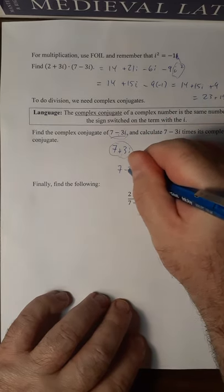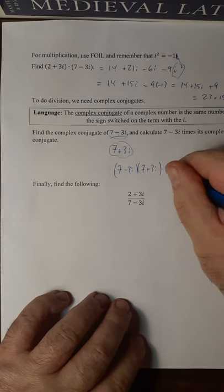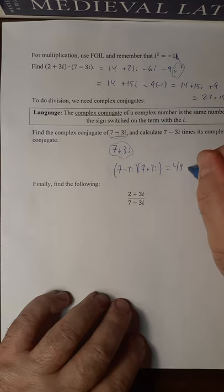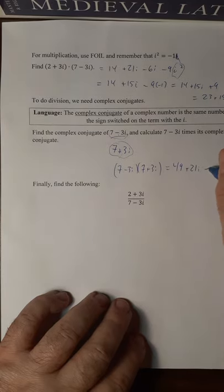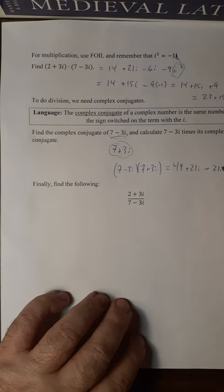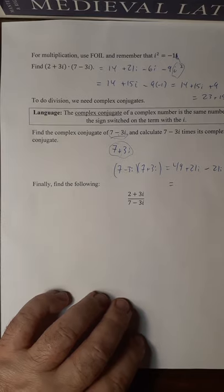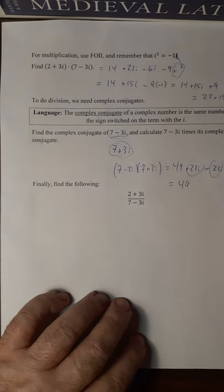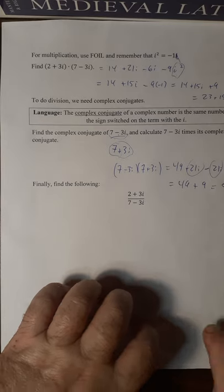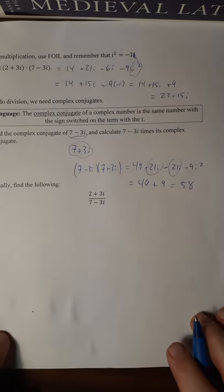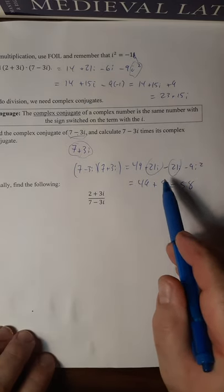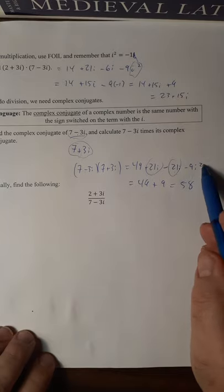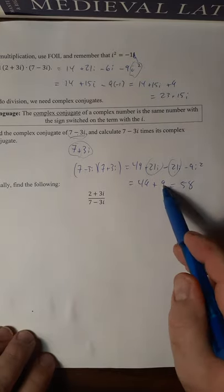Now the nice thing about these, and about any conjugates, is that when you FOIL them out, the outer and inner terms disappear. So first is 7 times 7 is 49. Outer is 7 times 3i, which is plus 21i. Inner is minus 3i times 7, which is minus 21i. And then last is minus 9i squared. So what do we have here? Outer minus inner is 0. We have 49. i squared is minus 1. So this is minus 9 times minus 1, which is 9. So we get 58 there. Slid off the side of the thing there. So outer and inner cancel out. Minus 9i squared. The i squared is minus 1. Minus 9 times minus 1 is plus 9. 49 plus 9 is 58.